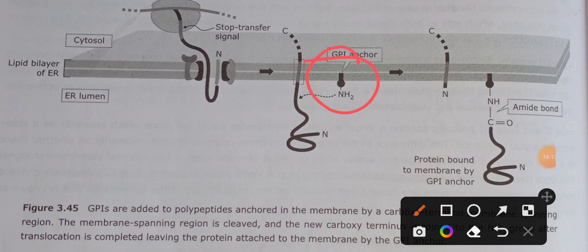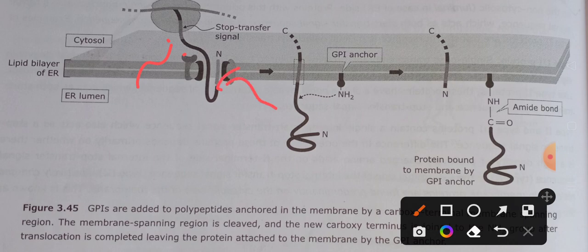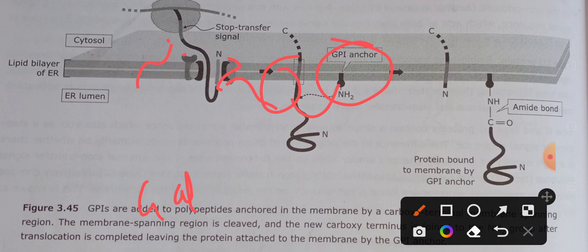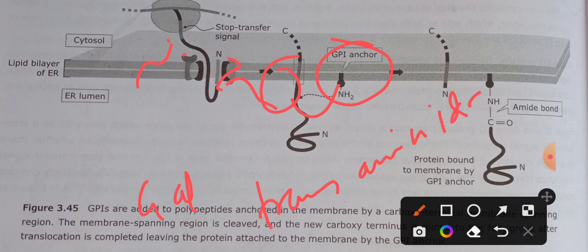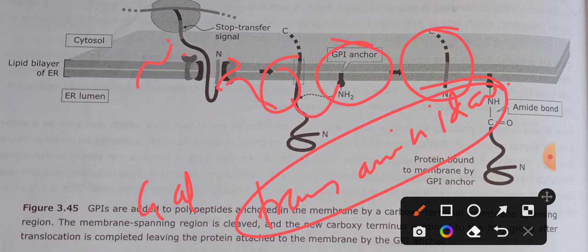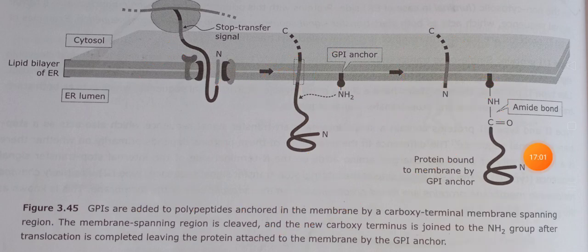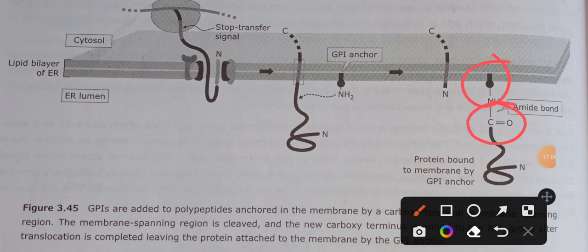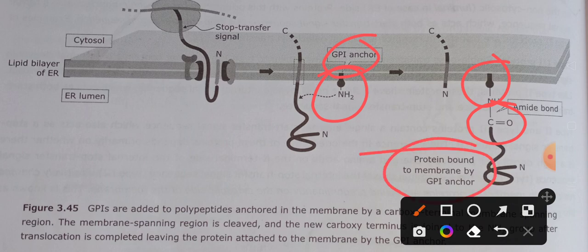To summarize GPI-linked proteins: the protein is synthesized in the ER, inserted into the ER membrane with the N-terminal start-transfer signal sequence cleaved, then transferred to the GPI anchor. Transamidase simultaneously clips the C-terminus, generating a new C-terminus that forms an amide bond with the GPI anchor's amino group. The GPI anchor then directs the protein to the cell membrane.